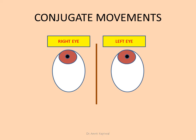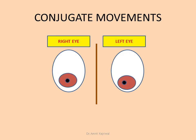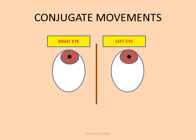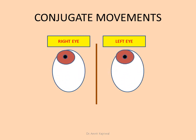Now, this is the conjugate movements of the right eye. The eyes can move simultaneously in the clockwise direction or in the anti-clockwise direction. They can move in the circular direction — clockwise completely or anti-clockwise — but they will move simultaneously.